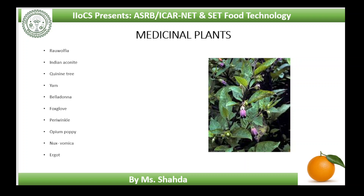Rauwolfia species contain about 80 or more alkaloids, of which Reserpine, Racinamide, Ajmaline, Ajmalicine and Serpentine are of commercial importance. The most important is Reserpine, which is chemically similar to Serotonin, a substance in the brain, and is related to LSD (Lysergic Acid Diethylamide). For centuries in India, powdered tap roots have been used for the treatment of moon disease or lunacy and also against snake bites. Hence, the common names Chandrabhaga, Chotachand or Sarpagandha are given to this plant.